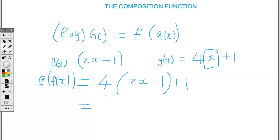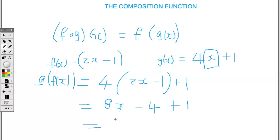So I have 2x minus 1 here, plus 1. Then expanding the bracket: 4 times 2x is 8x, and 4 times negative 1 is minus 4, plus 1. So we have 8x minus 4 plus 1, which is 8x minus 3.